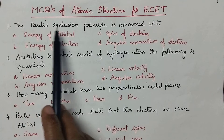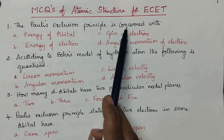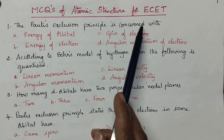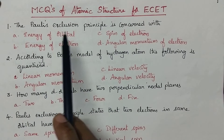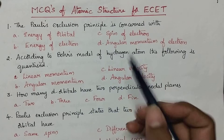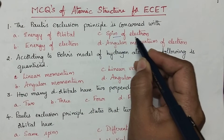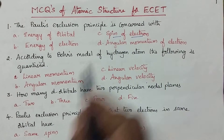The Pauli's exclusion principle is concerned with: Pauli's exclusion principle explains the spin of the electrons.